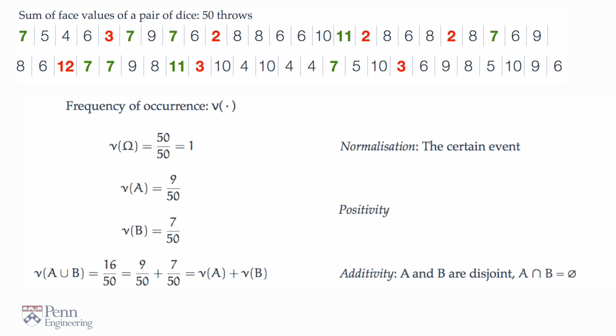And third, if you have two events which are mutually exclusive, which are disjoint, which share no elements, then the frequency of the union is the sum of the individual frequencies. This is additivity. These three principles now codify and determine what a probability measure should have.